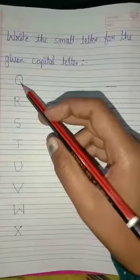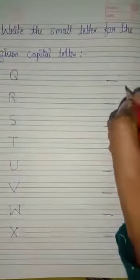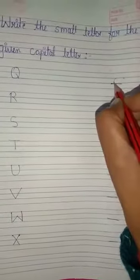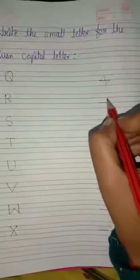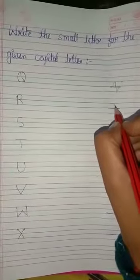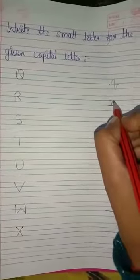This is Q. So how do we write small Q? Like this. This is small Q. This is R. Capital R. So this is small R.